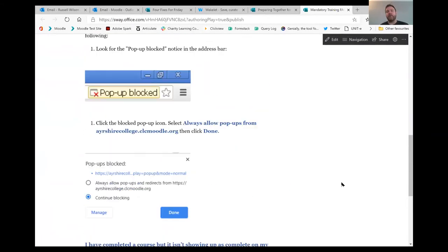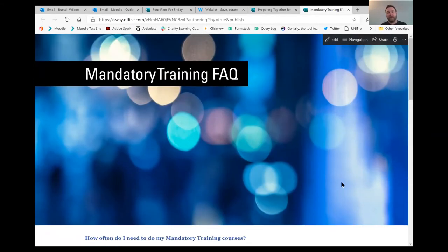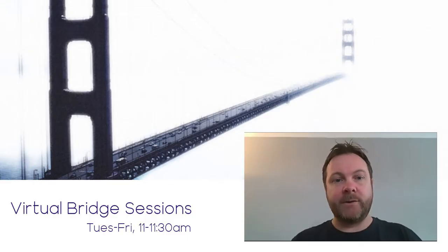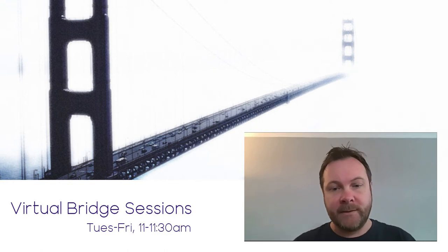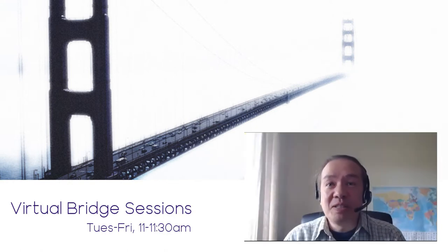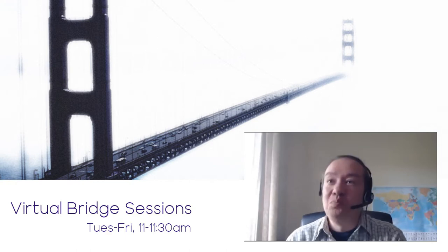When you hit that Transform button it basically just pops a Sway up with the same content from the Word document — it's automatically created a Sway with all that detail. It's a really quick way of getting your document into Sway format, and you can do that with PowerPoint as well as Word. Kenji, do you want to take questions about that just now or shall I keep going? Keep going unless anyone has a question.